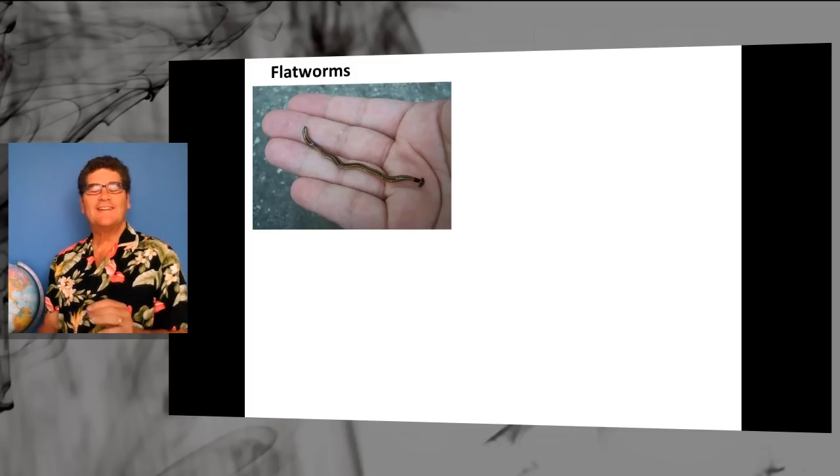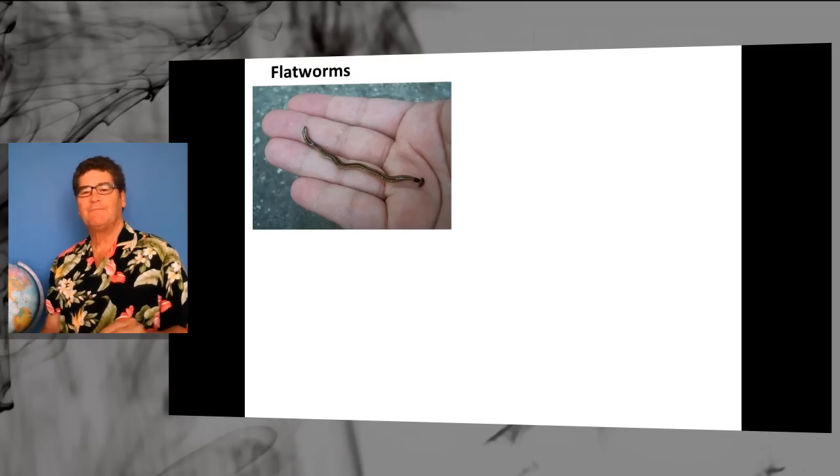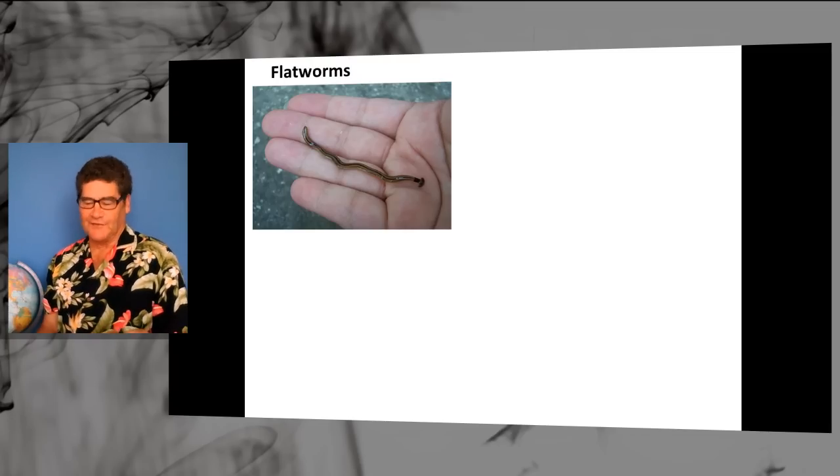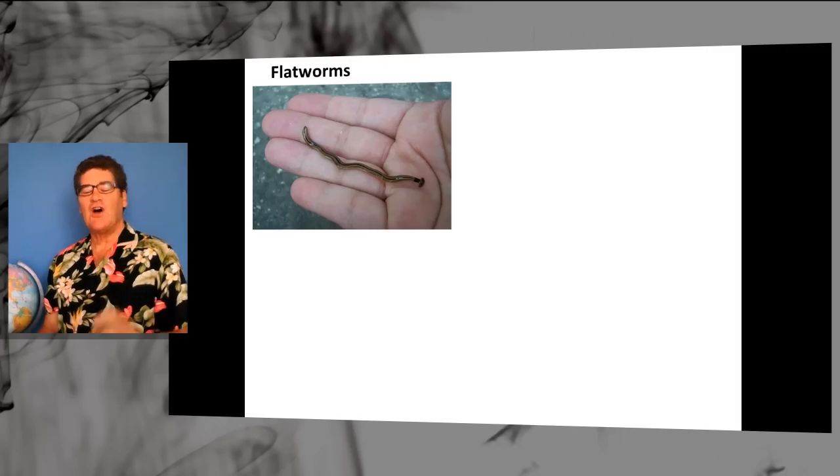Flatworms look like little tiny hammerhead sharks. They swim in soils, kind of, and they latch on to earthworms and eat them. They don't have an anus, so their mouth works for multiple functions. That's creepy enough.